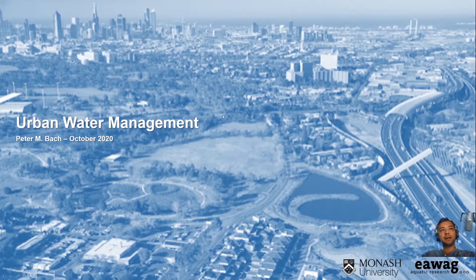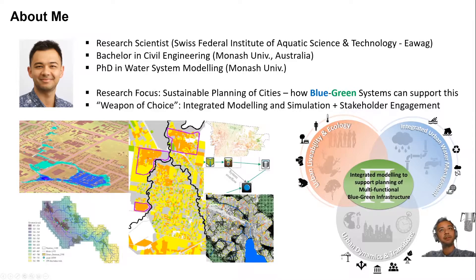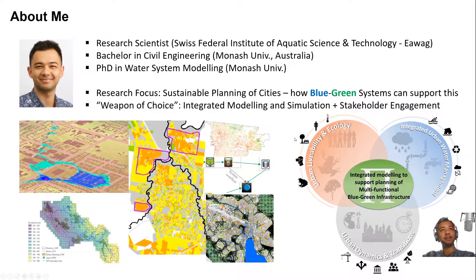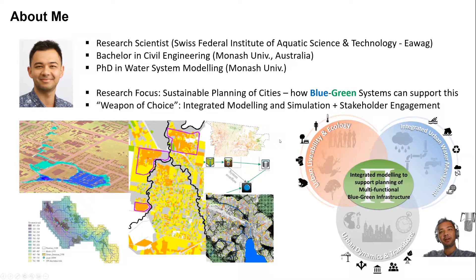A bit about myself. I'm a research scientist at the Swiss Federal Institute of Aquatic Science and Technology, also known as EAWAG, part of the ETH domain. I did my bachelor and PhD at Monash University, studying engineering and then branching out into urban planning, mostly around modeling and using computer models to help plan sustainable cities.